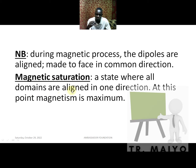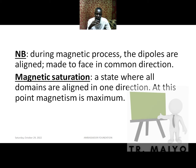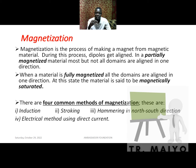During the magnetization process, dipoles are aligned to face in a common direction. Magnetic saturation is the state where all domains are aligned in one direction — at this point magnetism is at its maximum. Even if you continue the magnetization process, the strength remains constant because all the dipoles are already fully aligned.